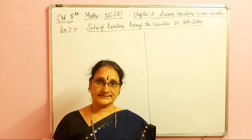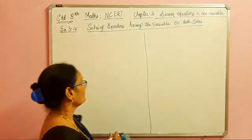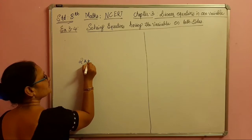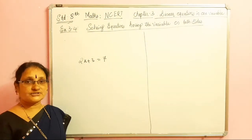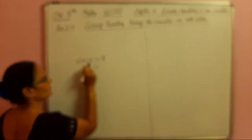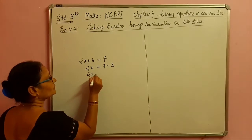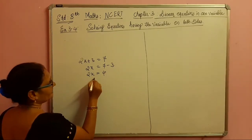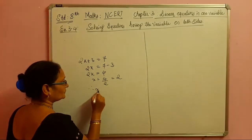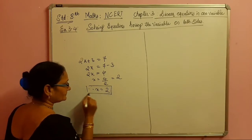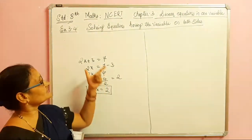In the previous exercise you learned how to solve a linear equation. For example, 2x plus 3 is equal to 7. Using the transposing method: 2x equals 7 minus 3, which is 4, so x equals 4 divided by 2, which is 2. This is the method of finding the value of x when the variable is on one side.